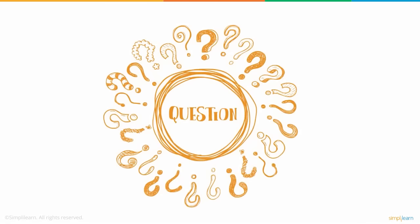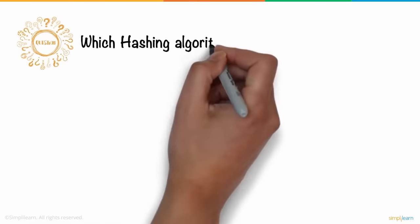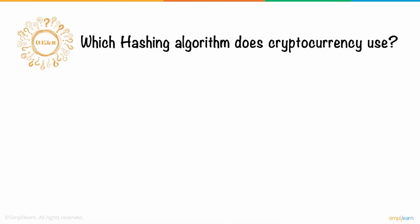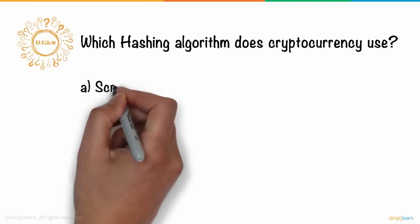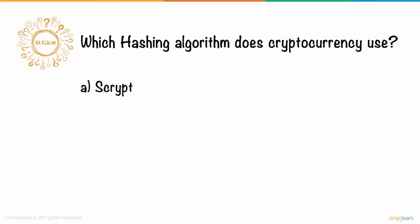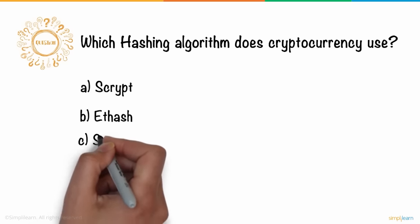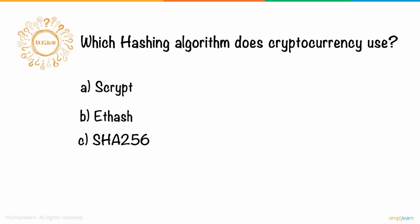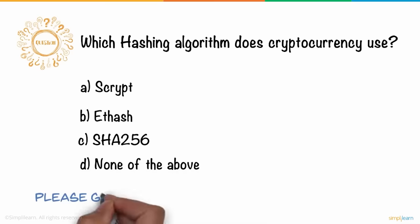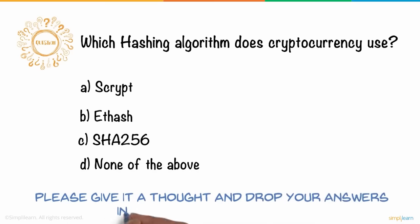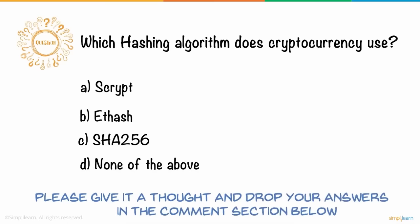Here's a question for you: Which hashing algorithm does Bitcoin use? A) Scrypt, B) Ethash, C) SHA-256, or D) None of the above. Please give it a thought and drop your answers in the comments section below.